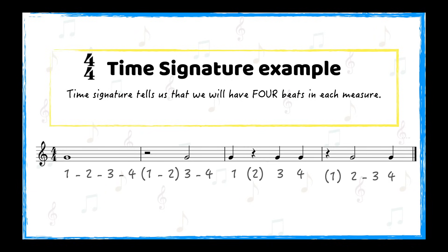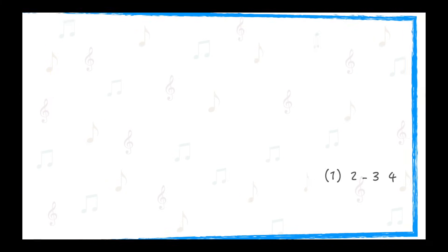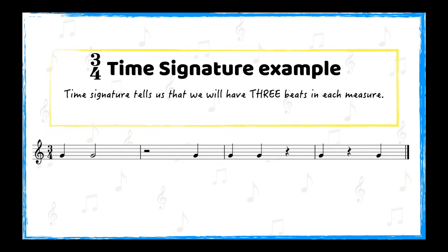Notice that every new measure starts with number 1. If you ever get any different number right after the bar line, then something went wrong along the way. Let's now look at an example with a 3/4 time signature. How many beats will we have in each measure this time? You're right — 3. And therefore, we will use numbers 1, 2, and 3 to add the counts.